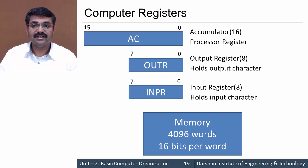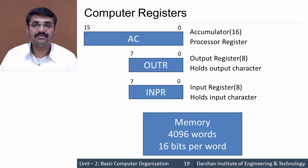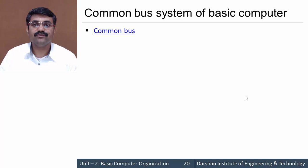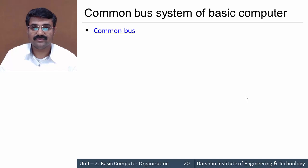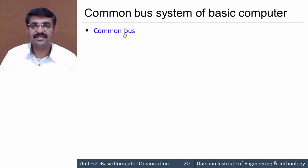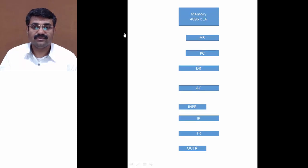These are the registers and memory required for our basic computer. Now let us see the arrangement — how they are mutually connected with each other. For that we need to understand the common bus system of a basic computer.